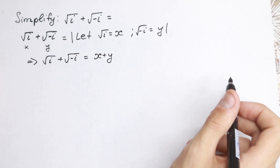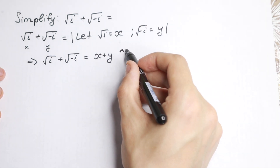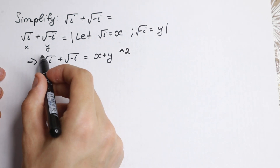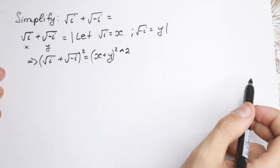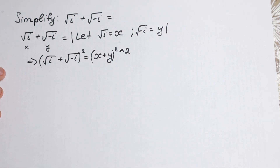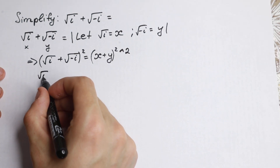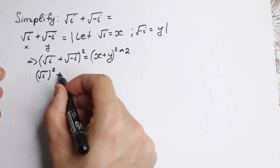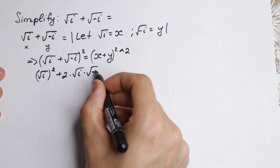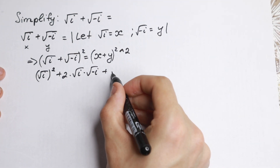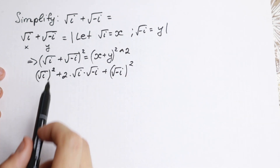And right now it's really good to raise both sides to the square — let's raise both sides to the second power. If we raise this, we square the left side, and we square the right side. What will we have? This is an (a + b) squared, so this is a classic formula. We get: square root of i squared, plus two times square root of i times square root of minus i, plus square root of minus i squared. So this is our left-hand side.